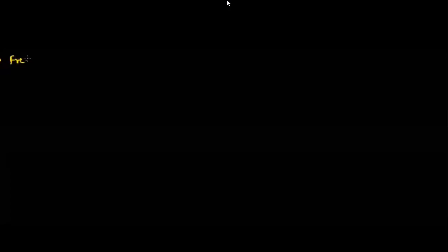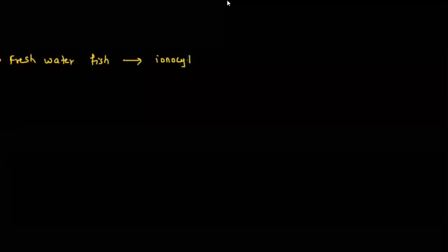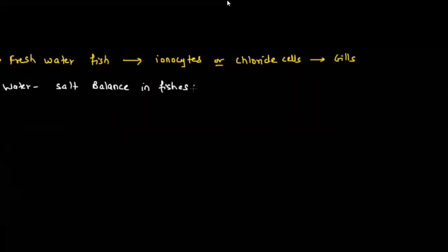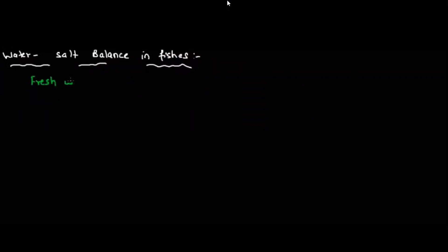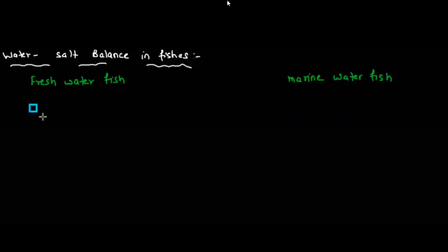Freshwater fish have specialized cells called ionocytes, also called chloride cells, present in the gills. These ionocytes help in regulating the water and salt balance. Let's compare the freshwater fish and the marine fish: a freshwater fish lives in a river where the salt concentration in water is very low.